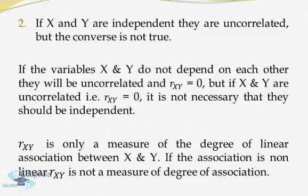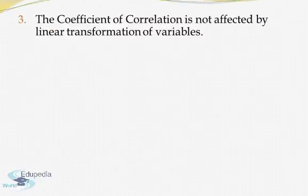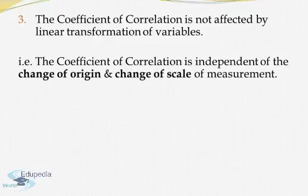And the third property is that the coefficient of correlation is not affected by linear transformation of variables. What it means is that the coefficient of correlation is independent of change of origin and change of scale. Linear transformations are these two: the change of origin and change of scale.